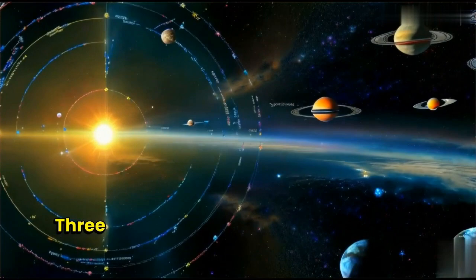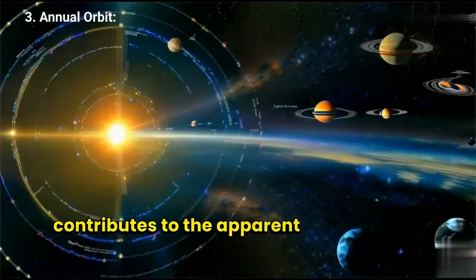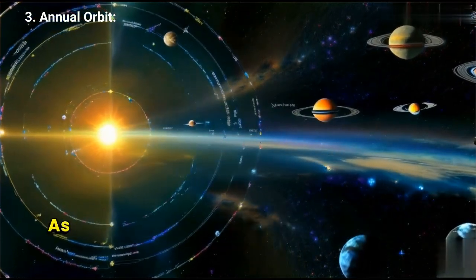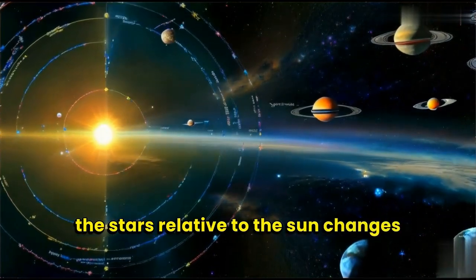3. Annual orbit. Earth's orbit around the sun also contributes to the apparent motion of the stars. As Earth moves along its orbit, the position of the stars relative to the sun changes slightly.